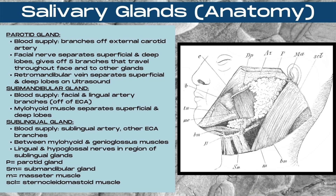The parotid gland's blood supply comes from branches off of the external carotid artery. The facial nerve separates the superficial and deep lobes and gives off five branches that travel throughout the face and to other glands. This is important to note, as when surgical excision is necessary, close attention is paid to the location of these nerves so that feeling is not lost in that section of the face. On ultrasound, we use the retromandibular vein as a dividing line between the superficial and deep lobes of the parotid gland, as it's readily visible on ultrasound.